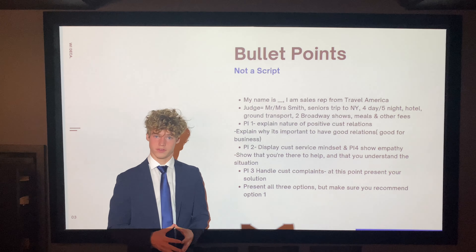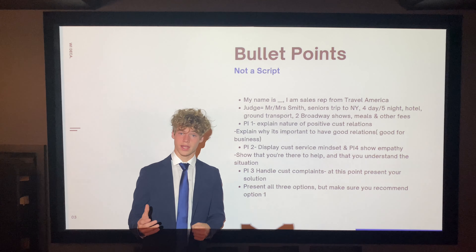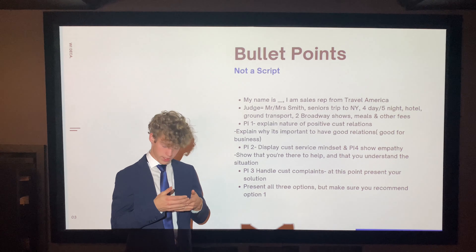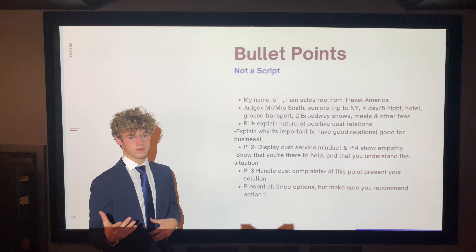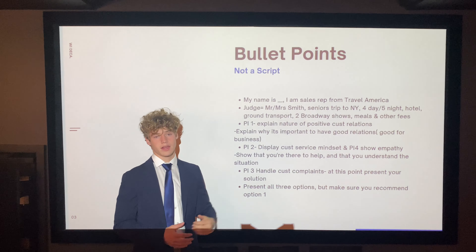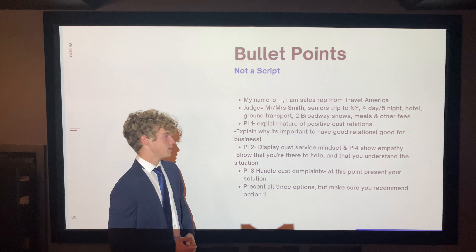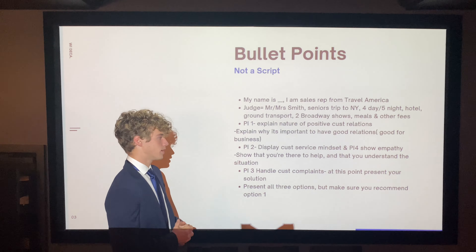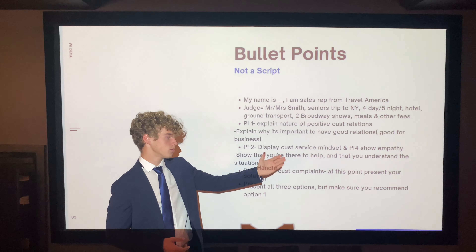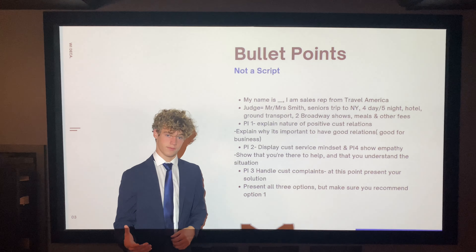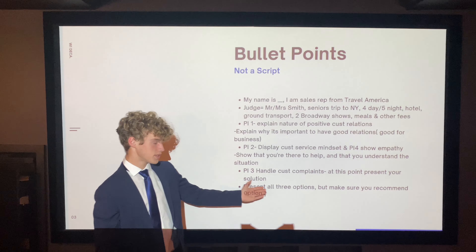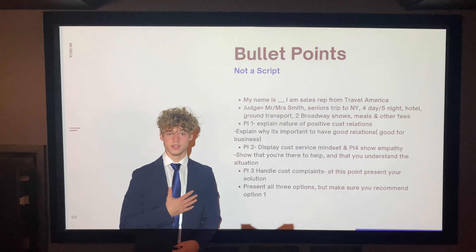At this point, you've probably used five to seven minutes of your time, and you can begin to review the information you already have. Remember, these are bullet points, not a script, because if you write a script, you'll read it and won't make eye contact with your judge. My bullet points are: number one, my name is Sean Robinson and I'm a sales rep from Travel America; number two, the judge's name is Mr. or Mrs. Smith, along with the trip details; number three, performance indicator one — explain the nature of positive customer relations and why good customer relations are important for business; performance indicators two and four — display a customer service mindset and show empathy, demonstrating that I'm there to help and that I understand the situation; and performance indicator three — handle customer complaints, at which point I present my solution. Remember, you're going to want to present all three options, but make sure you recommend one of them. For us, we're recommending option one.